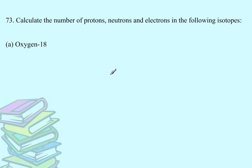So, what they've given you here is isotope notation, which tells me the element. And then here is the mass number.